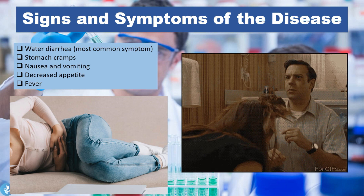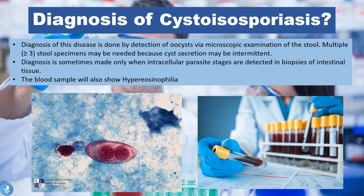So how can one go about diagnosing cystoisosporiasis? The diagnosis of this disease is done by the detection of oocysts via microscopic examination of the stool. Multiple samples — meaning more than three stool specimens — may be needed because the cyst secretion may be intermittent. In many cases patients may not always test positive for oocysts on microscopic examination, so multiple samples are needed for a higher rate of detection.